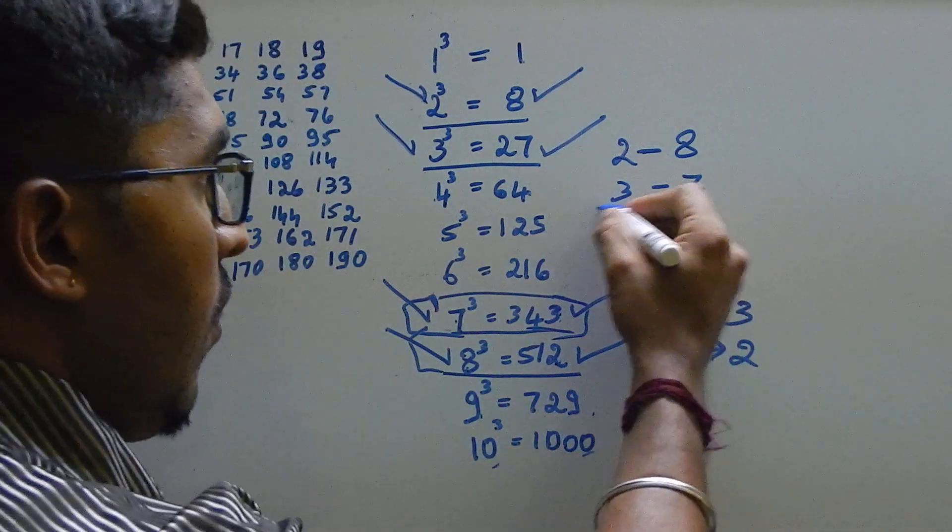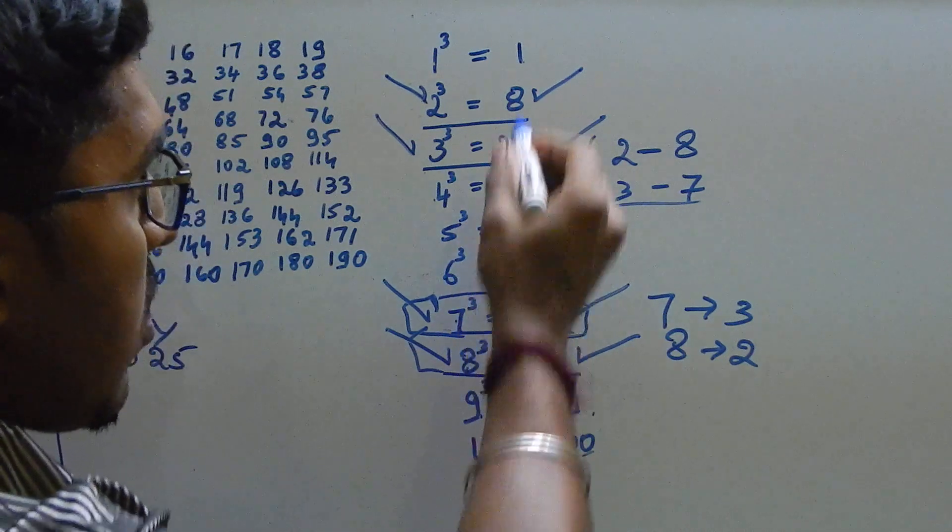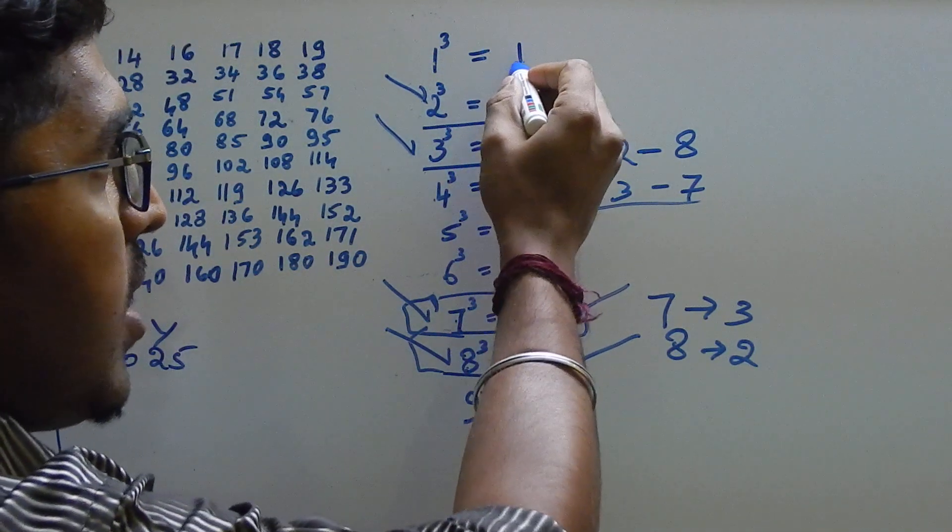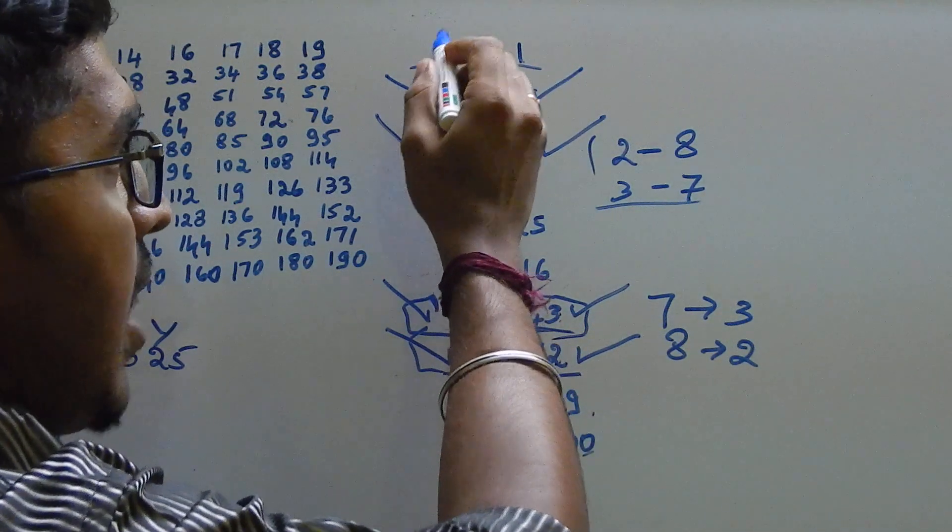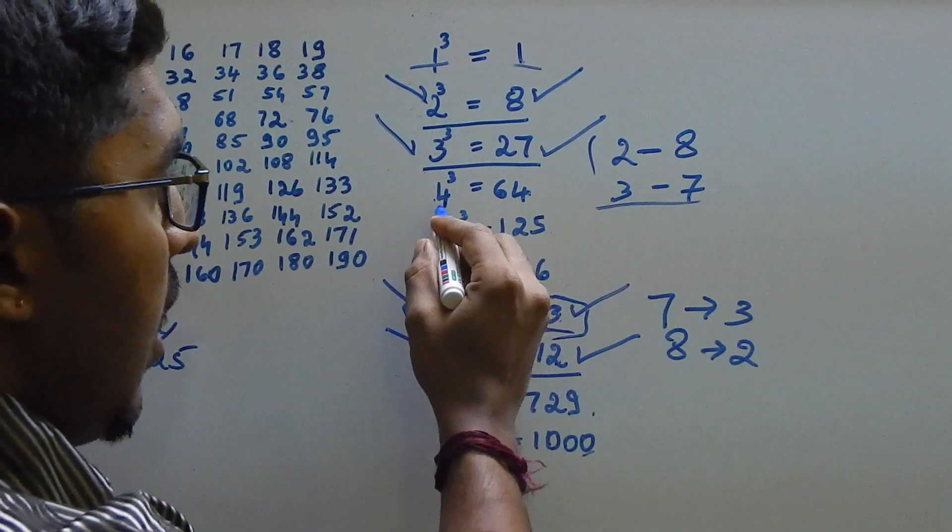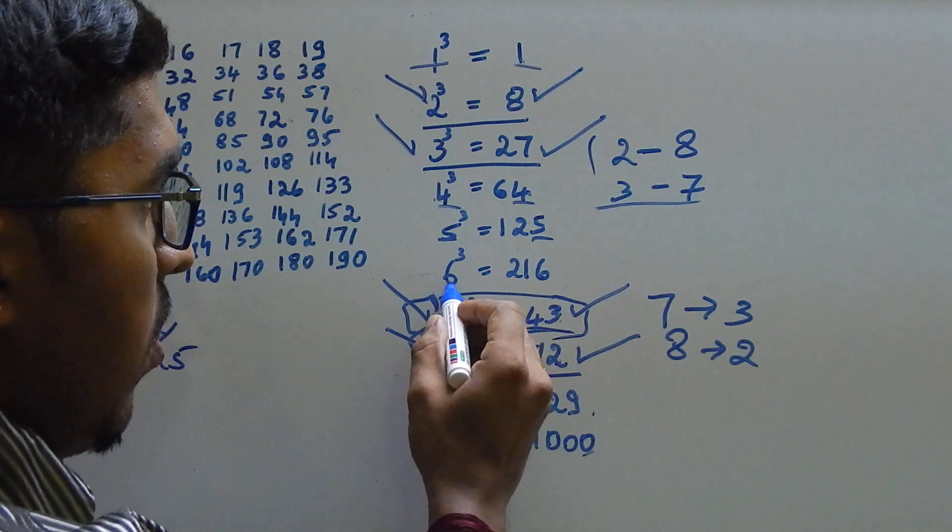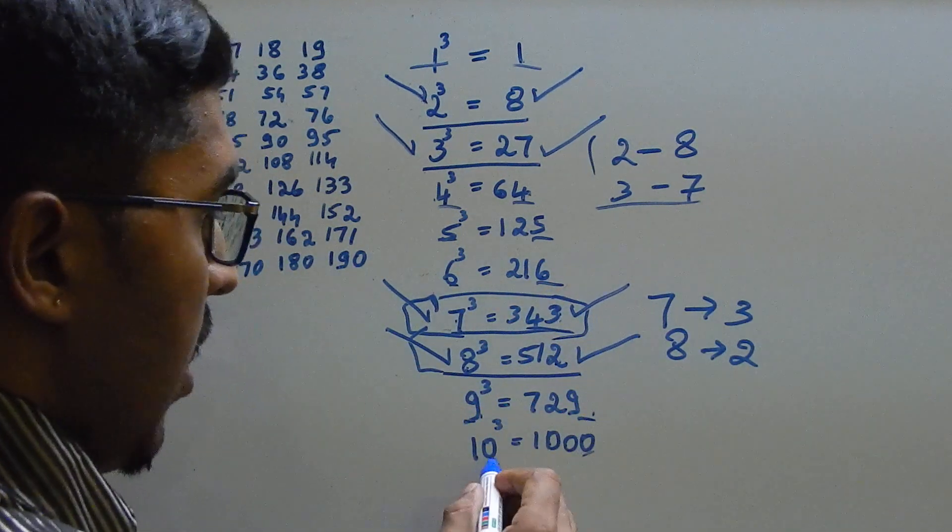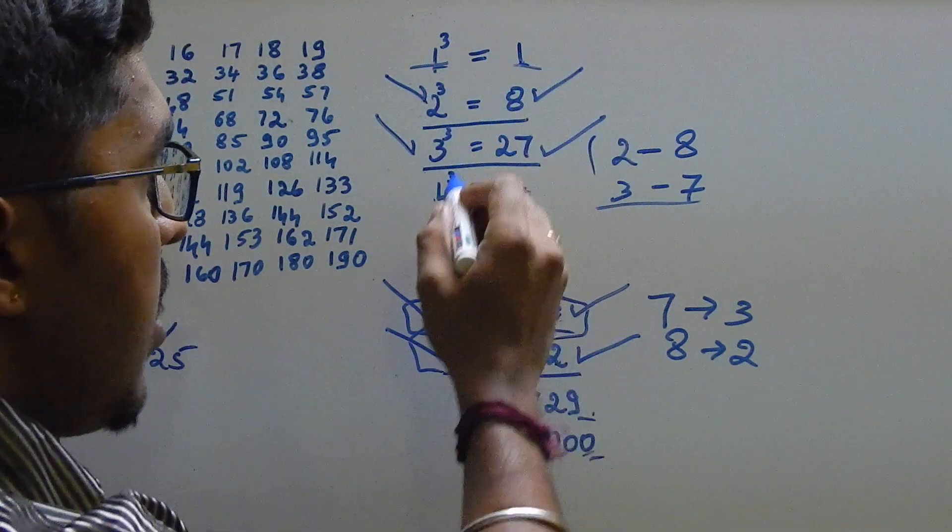Except these four values, all the rest of the values has the same cube values with unit digit similar to the initial, that is LHS digit. See, here 4, here 4, here 5, here 5. 6 cube, 6 is the unit digit. 9 cube, 9 is the unit digit. 10 cube, 0 is the unit digit. 1 cube, 1 is the unit digit.